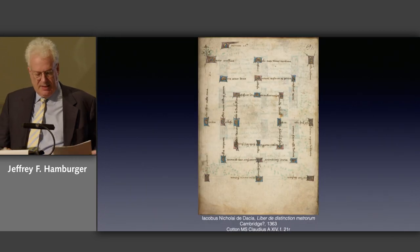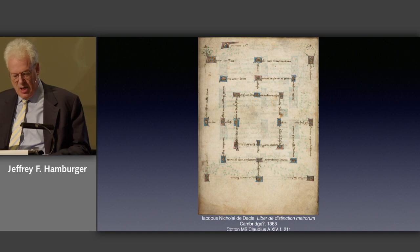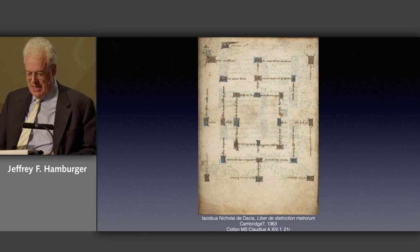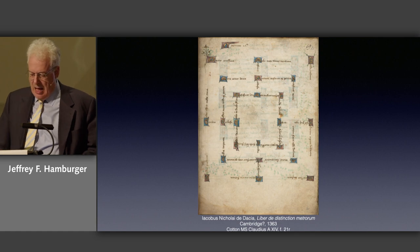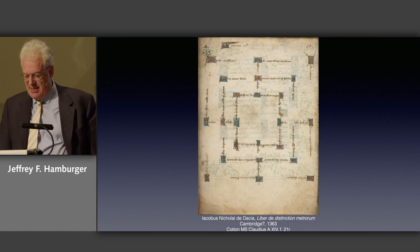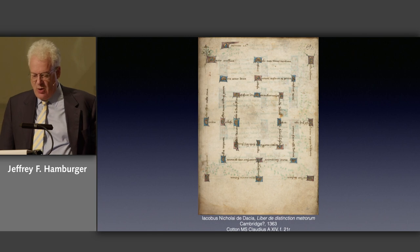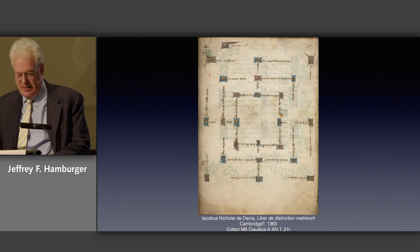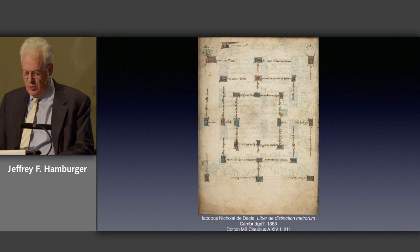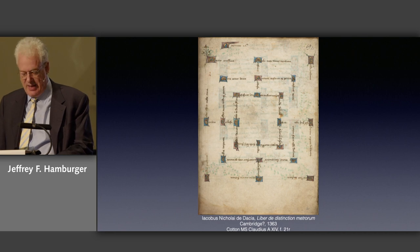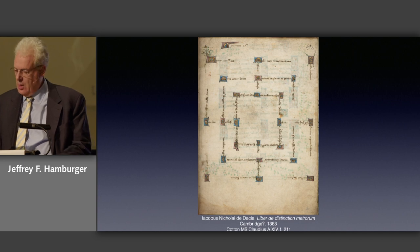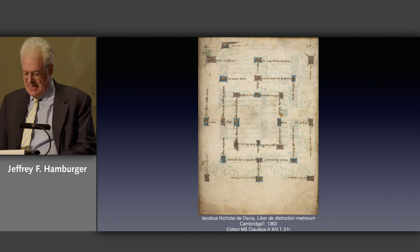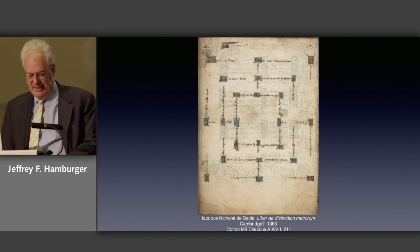Far less familiar is a late medieval collection, the book on the distinctions of meter by James Nicholas of Denmark, commissioned by Marie de Saint Paul, Duchess of Pembroke, best known as the founder of Pembroke College in Cambridge. The occasion for the commission was the death of her husband, Aimeiri de Valence, Duke of Pembroke, who had passed away in 1324. All the poems deal with death. One of the poems takes Optatian's concept of picture poetry as play, literally.